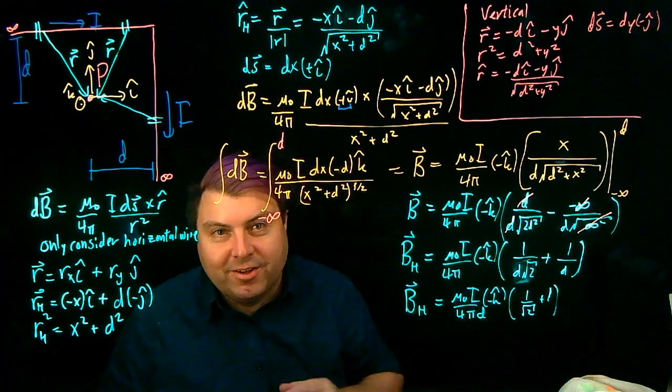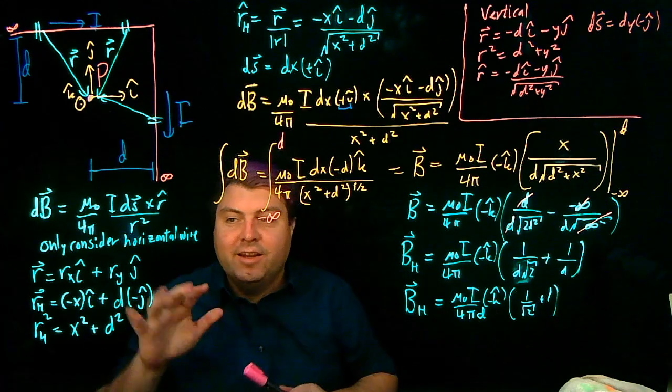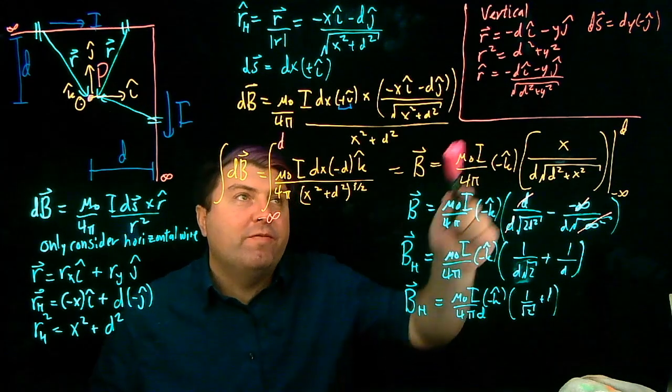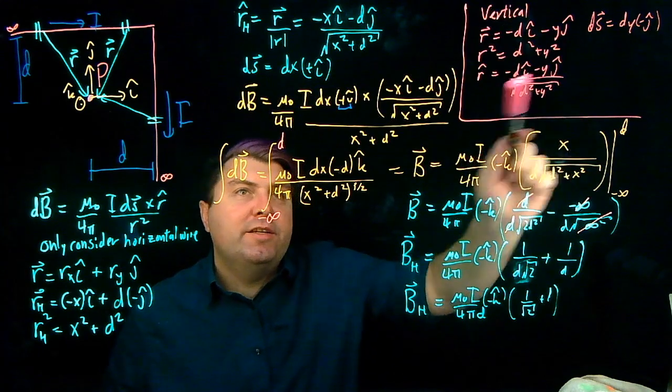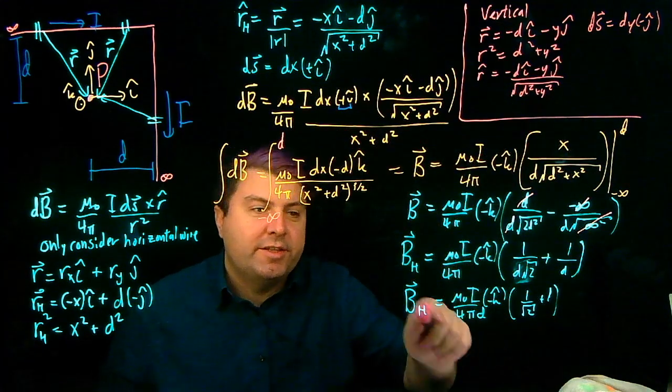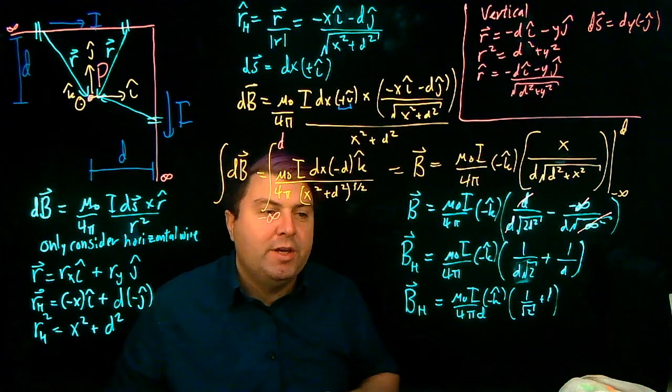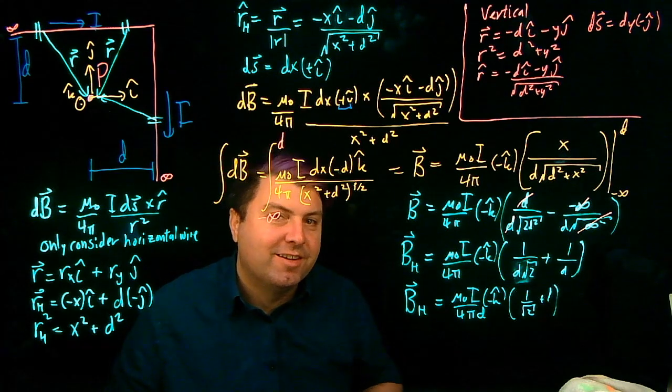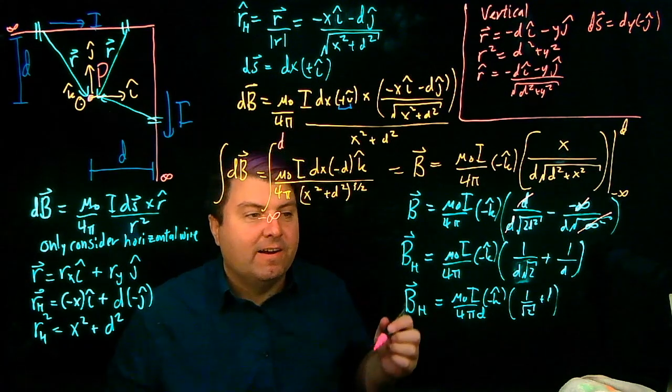So if I take a look through all of this, then pause the video. See if, using these ideas and using the steps, see if you can find what B in the vertical is.